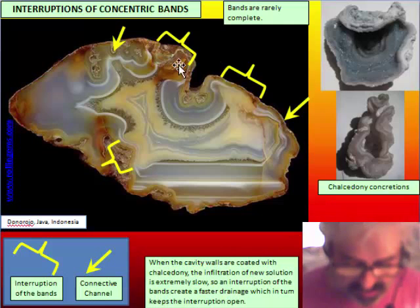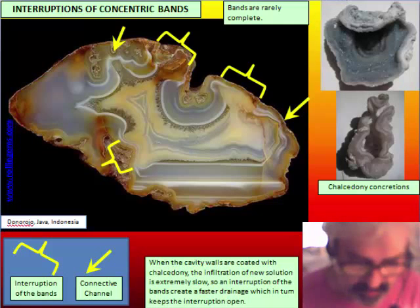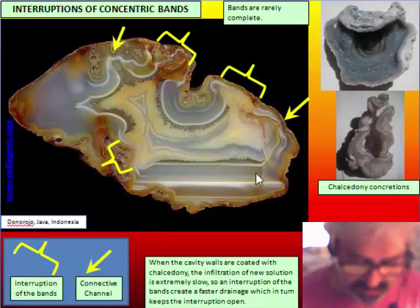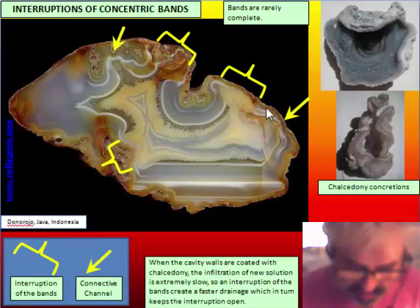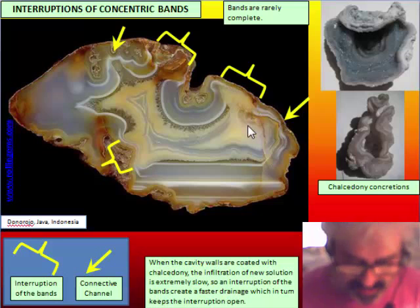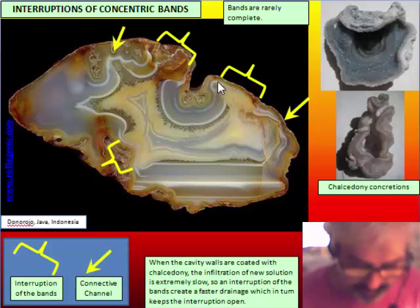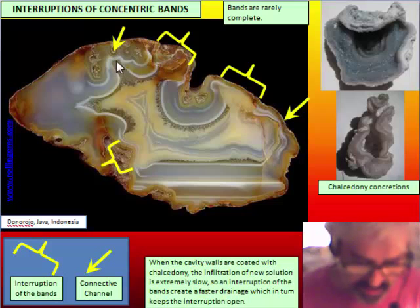Now we start to analyze the geometry of the band. It is quite rare that the bands are complete all around. Concentric banding and also horizontal banding together have some interruption. There are two kinds of interruption. The more obvious is a large interruption of the bands, but sometimes the interruptions are so small that they are called channels.